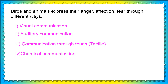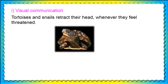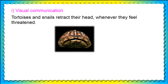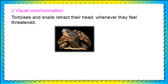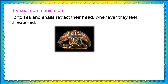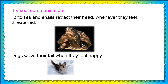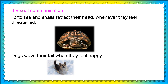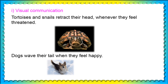Visual communication. Tortoises and snails retract their head whenever they feel threatened — when they see any danger, they immediately hide their head. Dogs wave their tail when they feel happy or when they see their master.